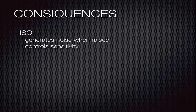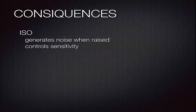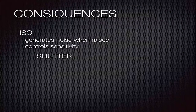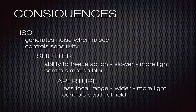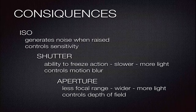The consequences: the ISO generates noise when raised, but it controls sensitivity. The shutter controls the ability to freeze action — the slower the shutter speed, the more light you allow in, but it becomes more blurry. So if you have a subject that's moving and you don't want motion blur, you have decisions to make. And finally, the aperture: the smaller the f-stop — the wider the opening — the more light you allow in to hit the sensor or film plane, but it narrows your depth of field consequently.